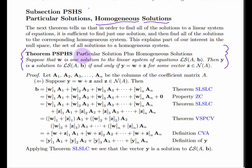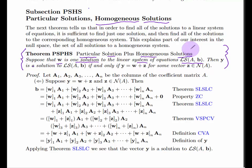This theorem is really a particular case of a very general principle. The theorem is called 'particular solution plus homogeneous solutions,' and that summarizes what it's about. Suppose that W is one particular solution to the linear system of equations LS(A,B) — that is, the set of X such that AX equals B. So that's not necessarily a homogeneous system if B is not the zero vector.